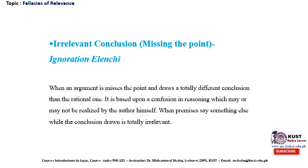The last fallacy of relevance is called irrelevant conclusion, or ignoratio elenchi — also known as 'missing the point.' When an argument misses the point and draws a totally different conclusion than the rational one, it is based upon confusion in reasoning. For example, if I tell students that if you work hard you will pass the exam and be successful in life, the conclusion should follow from studying hard.